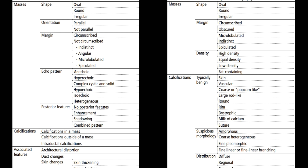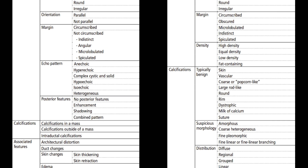For suspicious calcification morphology, we have: amorphous, coarse heterogeneous, fine pleomorphic (which is quite suspicious), and fine linear or fine linear branching (also suspicious). Distribution ranges from diffuse, regional, grouped, linear, or segmental. Linear and segmental are the most suspicious distributions because most cancers start in the duct, and when they arise in a single duct they acquire a linear or segmental distribution.